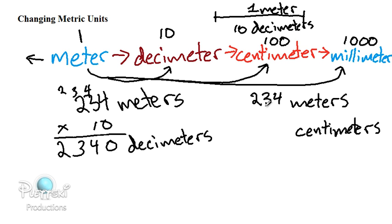To get from 234 meters to centimeters, we need to multiply 234 meters by 100. Because, remember, every meter has 100 centimeters. So if we had 1 meter, it would be 100 centimeters. If we had 2 meters, it would be 200 centimeters. If we have 234 meters, it would be 234 hundred centimeters, or 23,400 centimeters.